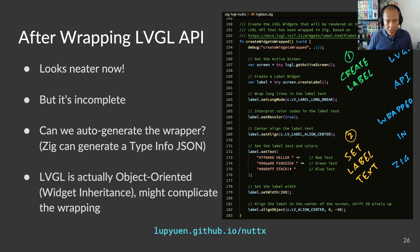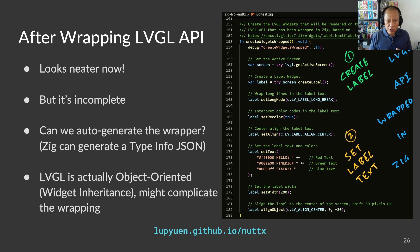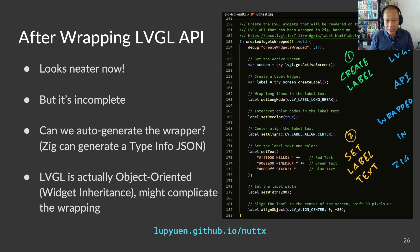After wrapping our LVGL API with Zig, we get this tidier version of our LVGL app that we saw at the start of the presentation. This code runs okay and renders the label correctly. But if we try to do anything else in LVGL, our wrapper might not support it because our wrapper is incomplete. To build a complete LVGL wrapper, we might need some automation. The Zig compiler can generate a type info JSON that describes all the types and functions imported from LVGL. We could scan through that JSON and auto-generate the LVGL wrapper. However, mapping LVGL widgets to Zig can get challenging because LVGL is actually object-oriented and supports widget inheritance, while Zig isn't an object-oriented language.